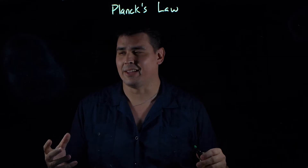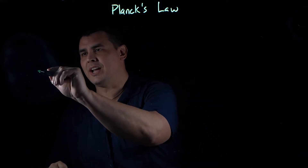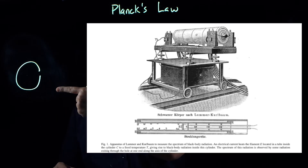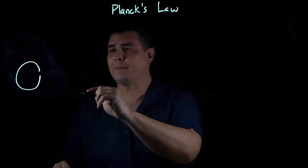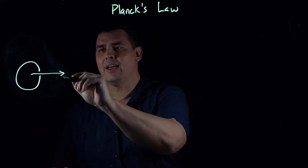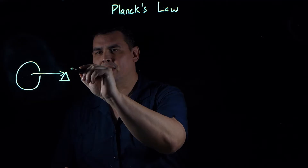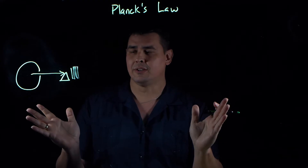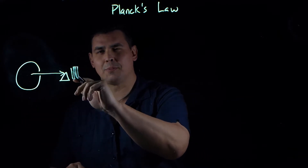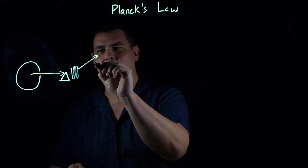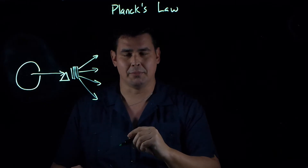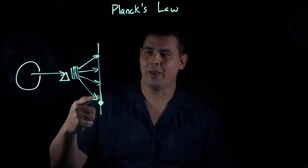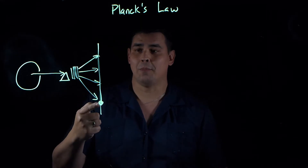Let's look at the observations they were making at the time. The way they would do this: they had a big giant electrically heated oven with a hole punched in the side so radiation could come out. That radiation would go through prisms and diffraction gratings, which split light into different wavelengths, making a spectrum. Then they'd move a detector down the line to see the different wavelengths and how much of each wavelength showed up.